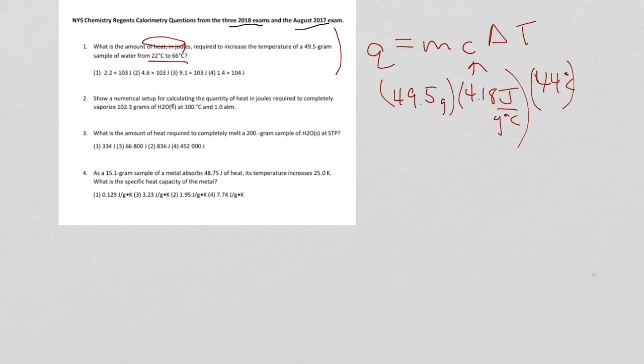So what's left is to use a calculator. And I have mine here. So let me find it. And what do we have? 49.5 times 4.18 times 44. Now on the calculator you're going to get an answer of 9104. I'm just going to round it to the whole number of joules.